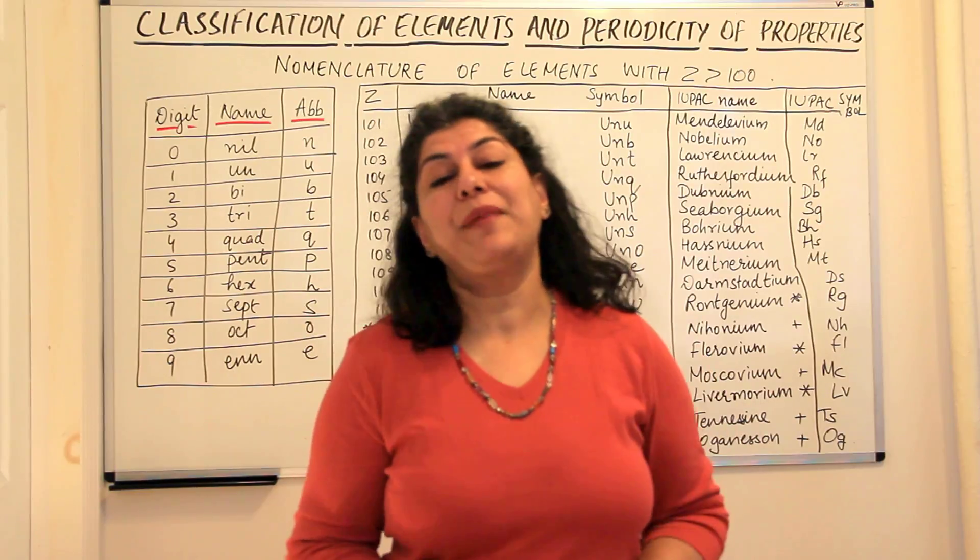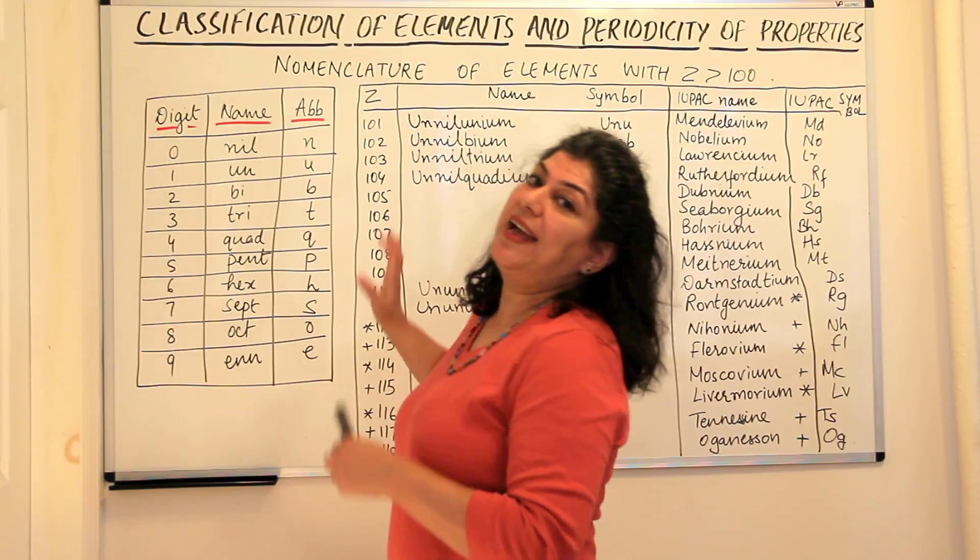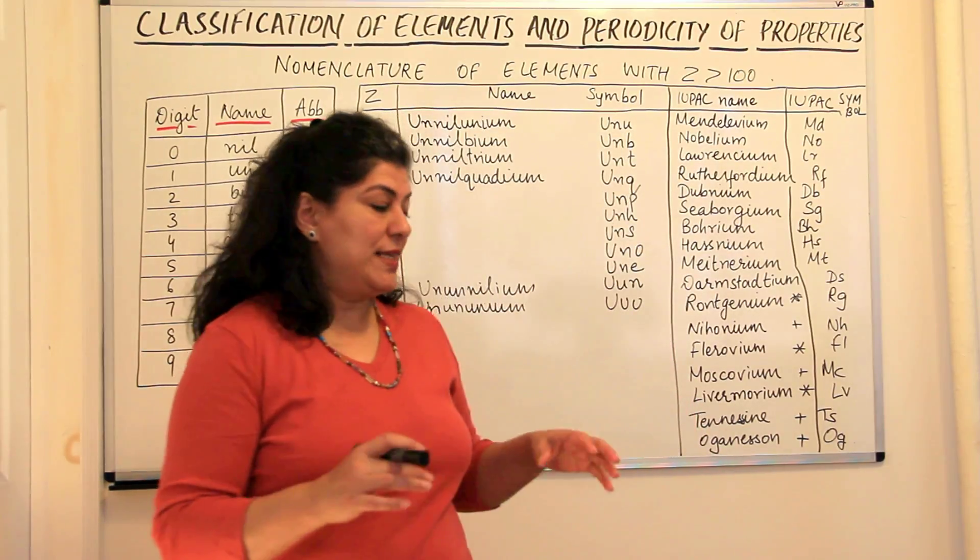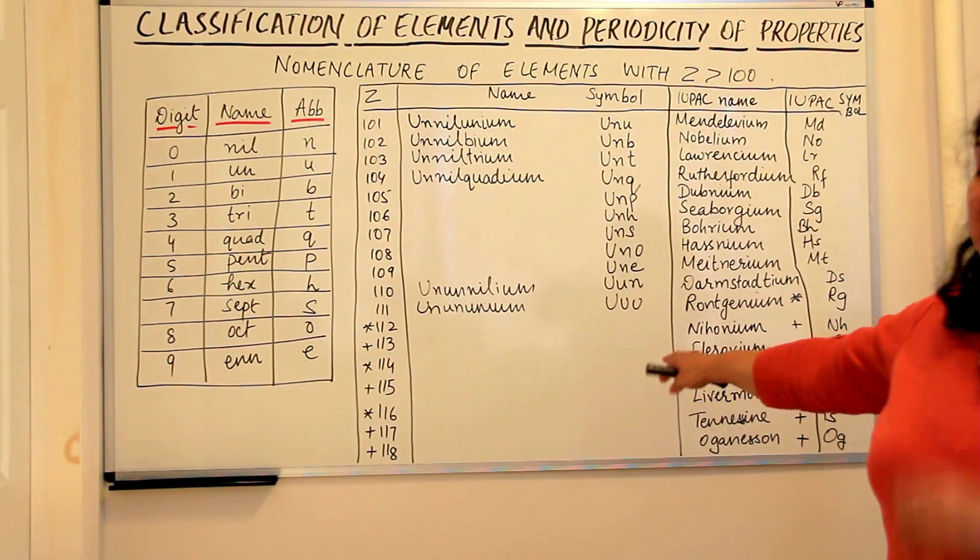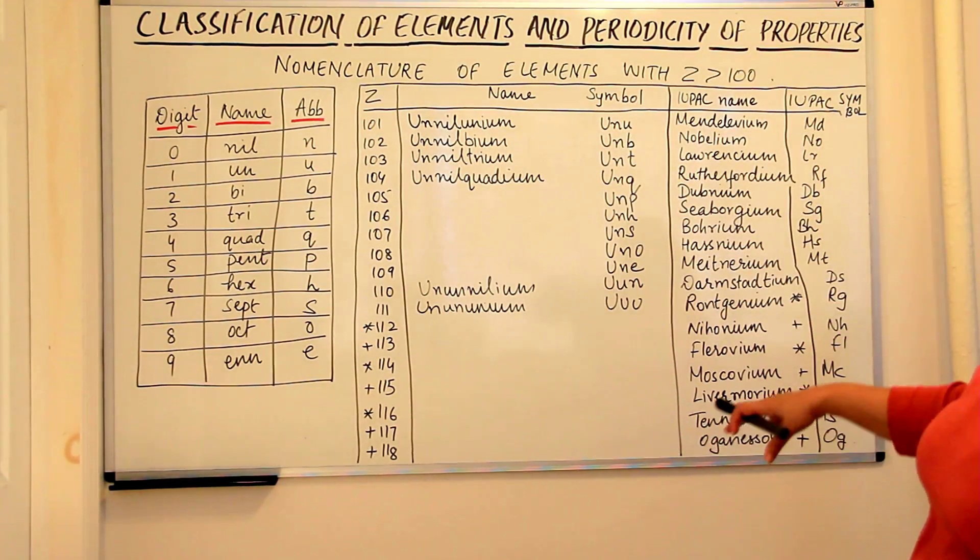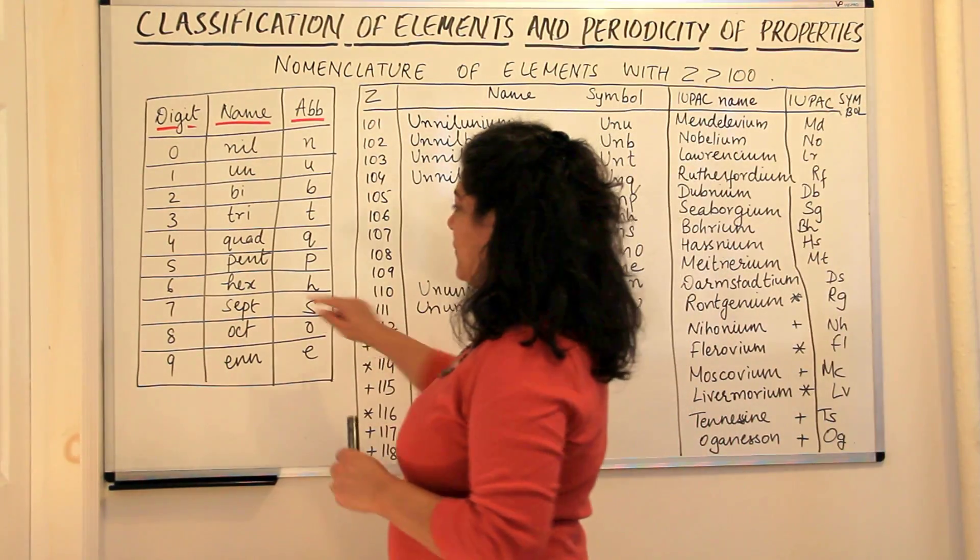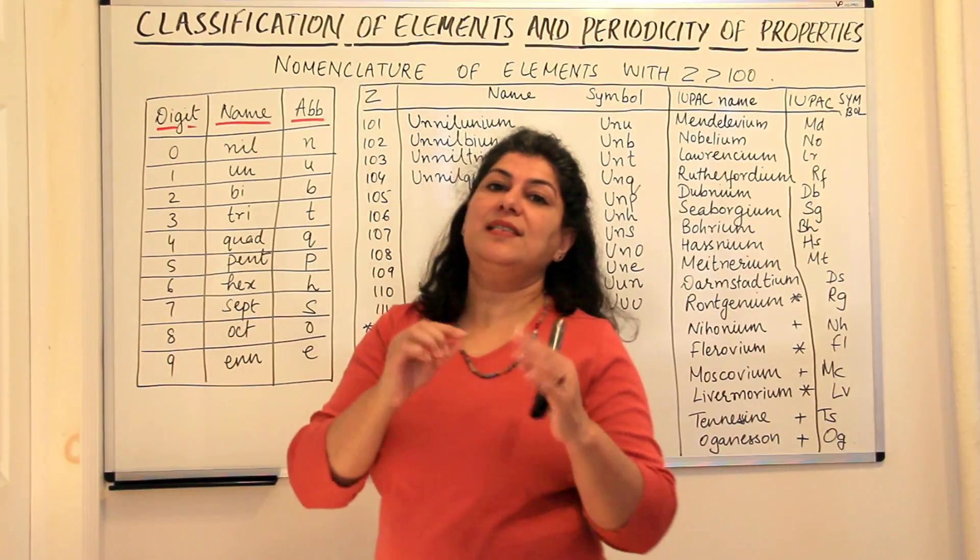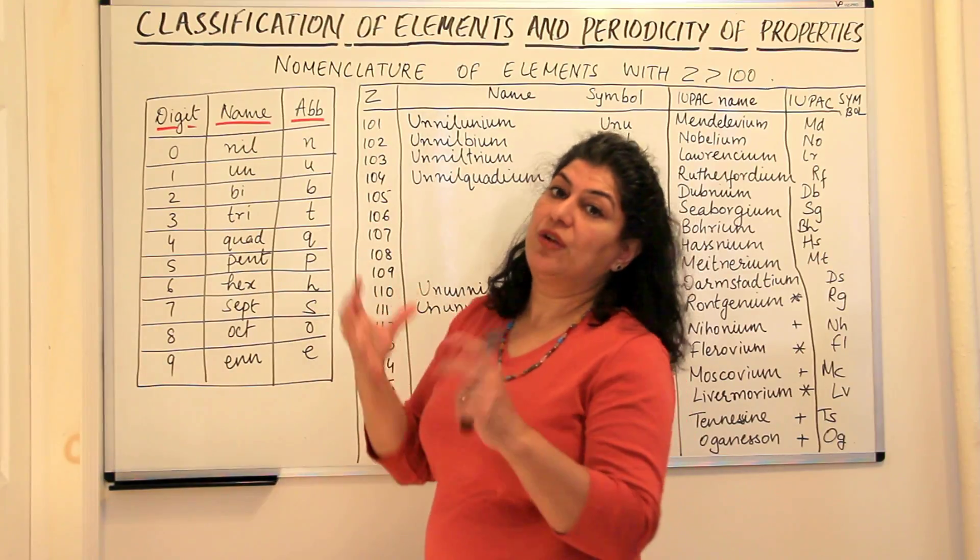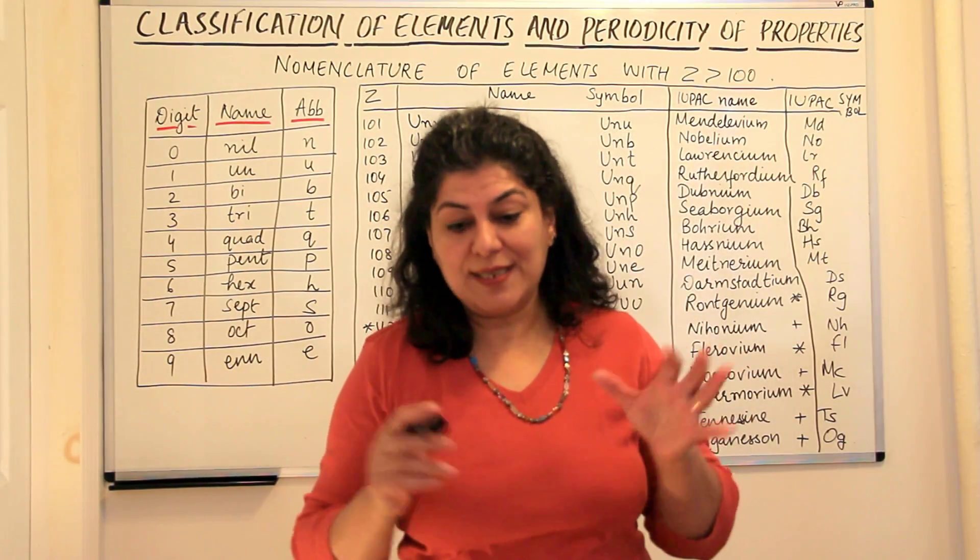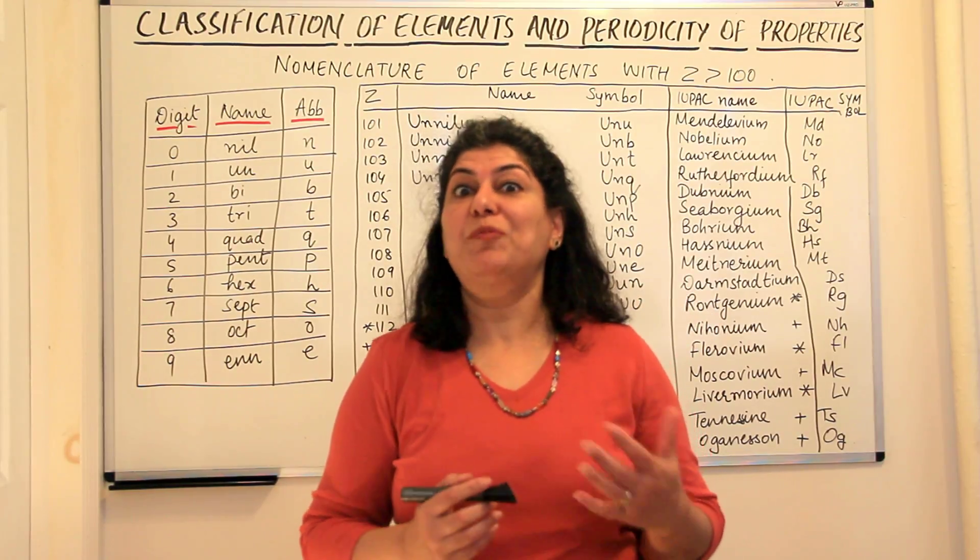But till a name has actually been decided on, we can continue to use these names and these symbols. So I would suggest you could pause the video and fill up the rest of the names and the symbols here and it would be practice for you. So just by writing the digit names and adding I-U-M to it, you get the name and the three abbreviations would make the symbol of the element. So this is something that you should know before we actually come to the modern periodic table and the modern periodic law.